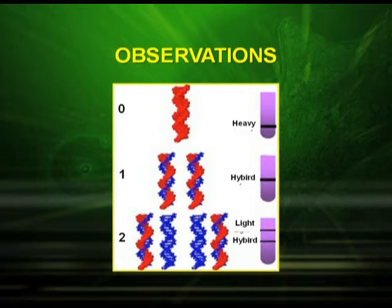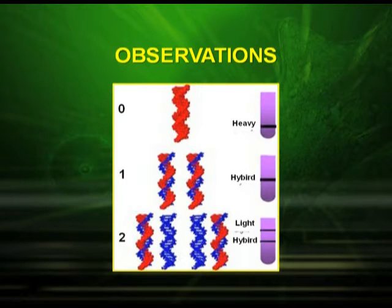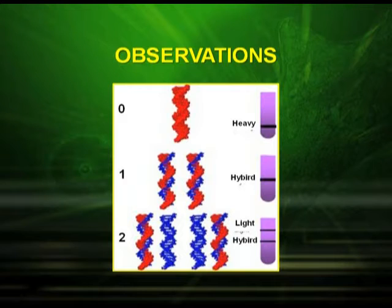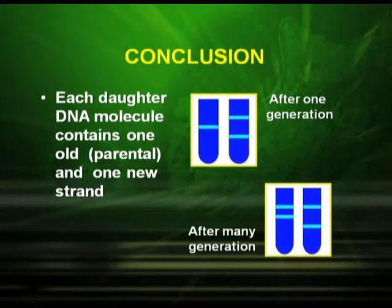As you can clearly see in the picture, at 0 generations using N15, the band was at the bottom of the centrifuge. In the first generation, a hybrid DNA was produced containing both N14 and N15 DNA. In the second generation, when centrifuged again, a light DNA appeared above the hybrid DNA. They concluded that each daughter DNA molecule contains one old parental strand and one new strand.